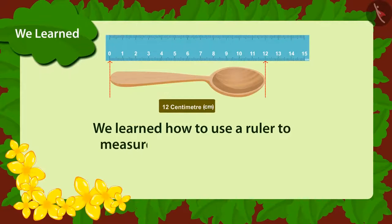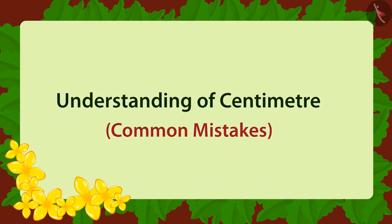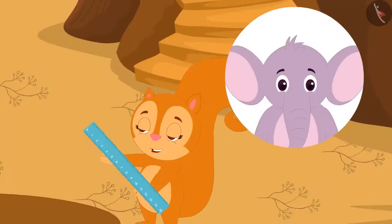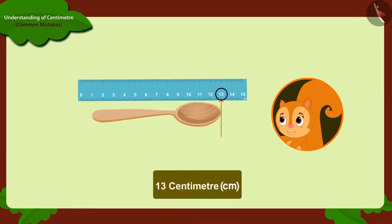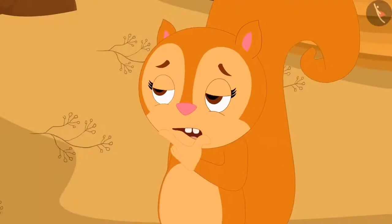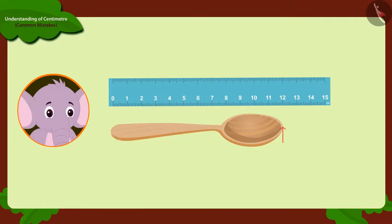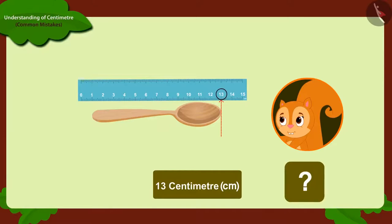Chanda used a ruler to measure length in centimetre. Chanda became very happy after learning about the ruler from Appu. She measured her spoon again with a ruler. Chanda got the length of the spoon as thirteen centimetres this time. Chanda started wondering how it happened. When Appu measured the length of that spoon, it was twelve centimetres.